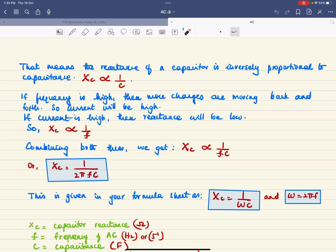If the frequency is high, there are more charges moving back and forth, so the current will be high. If the current is high, then the reactance will be low. So the reactance of a capacitor is also inversely proportional to frequency.